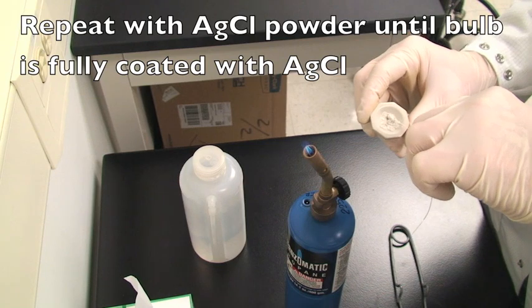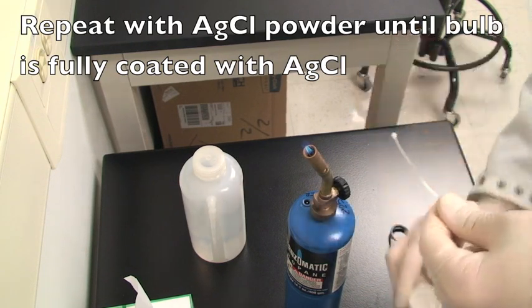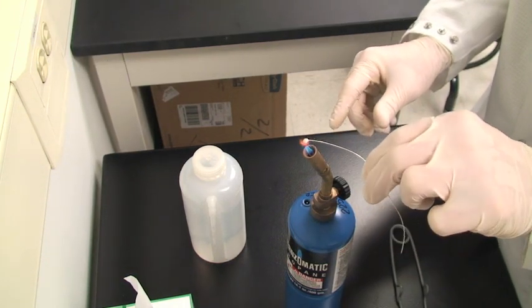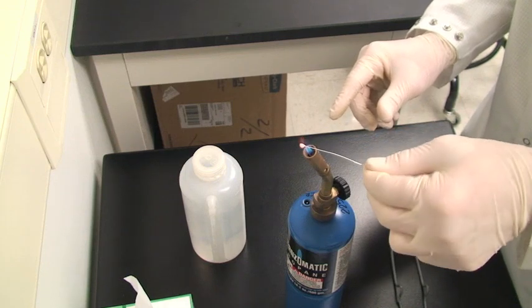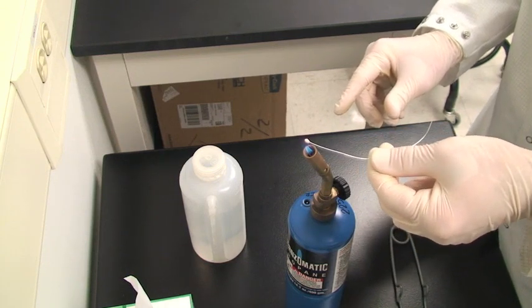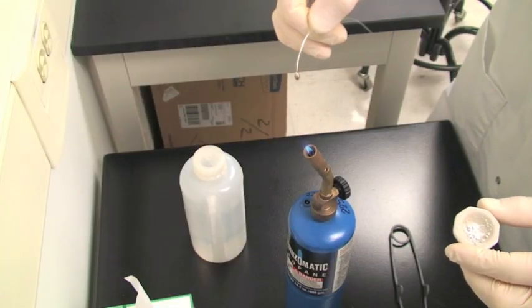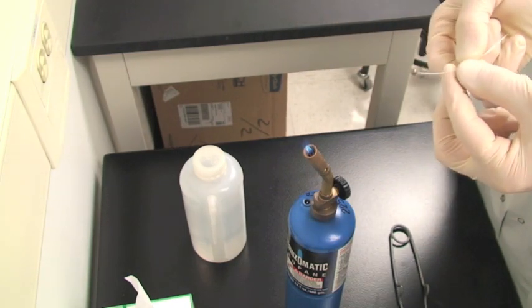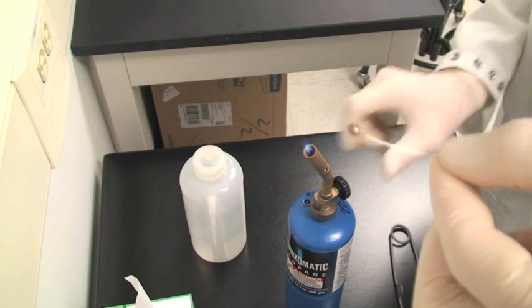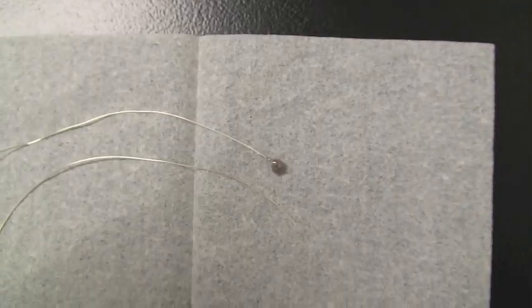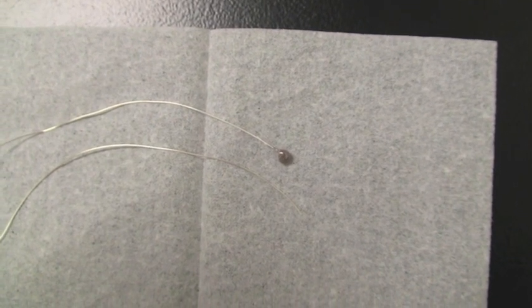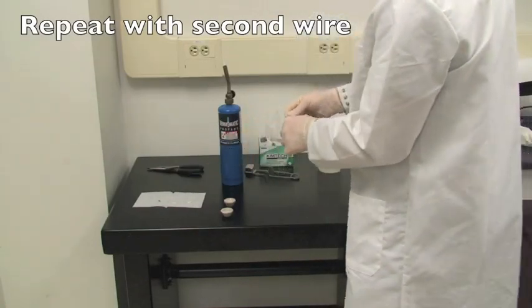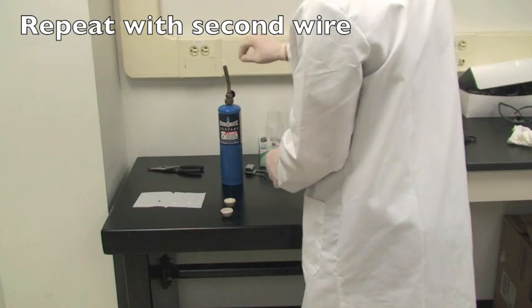We'll now repeat the entire process using silver chloride to coat the outside of the bulb. Silver chloride has a significantly lower melting point than silver, and thus less heat will be needed in order to form the final silver chloride coating on the electrode. The process should be repeated until the entire silver bulb has a coating of silver chloride. Repeat the entire process with the second wire to make two identical silver silver chloride electrodes.